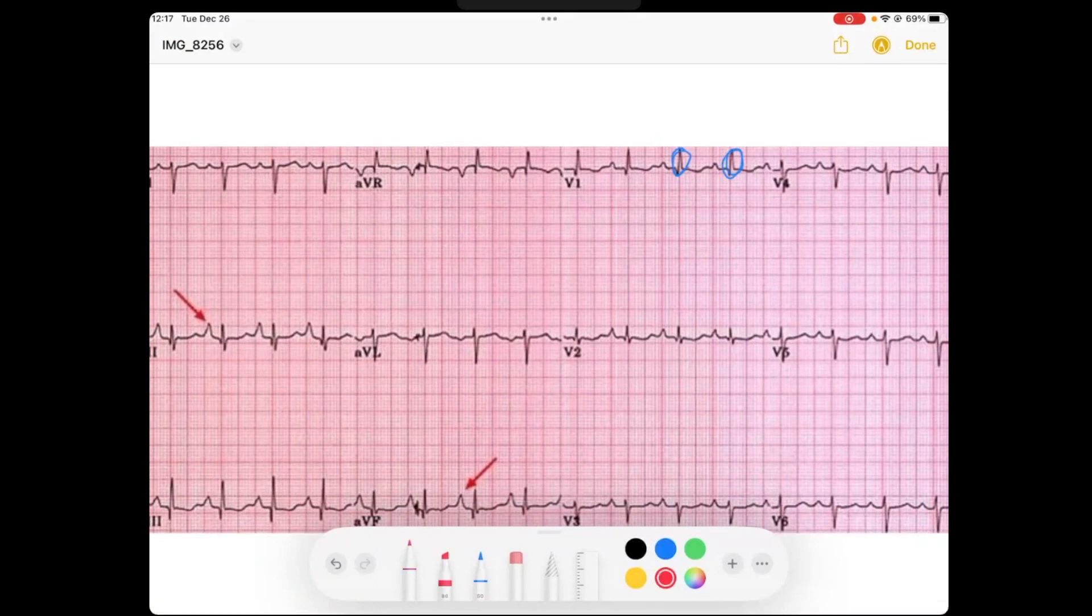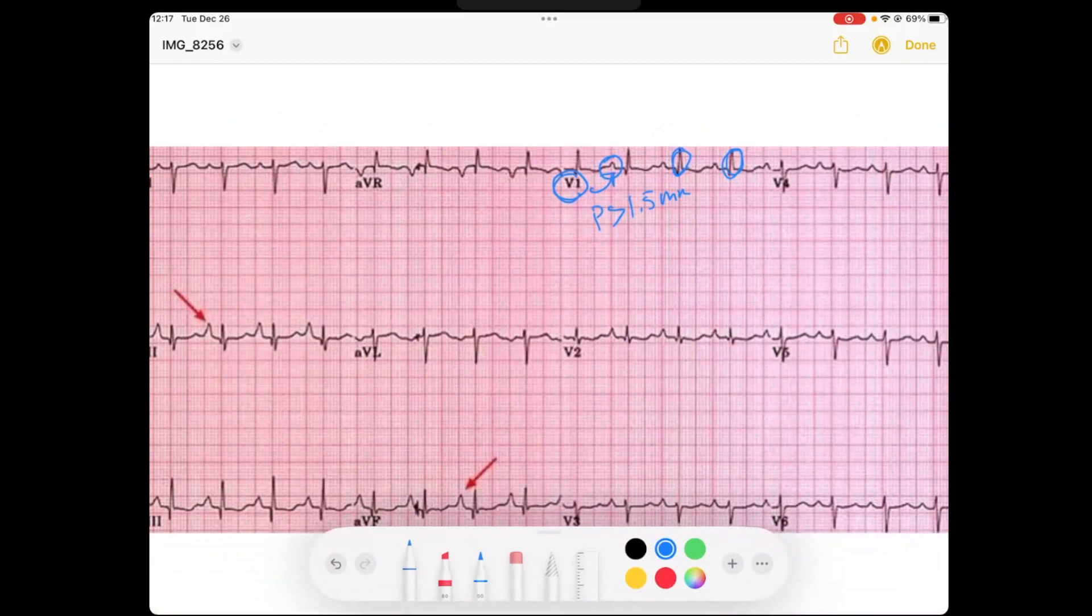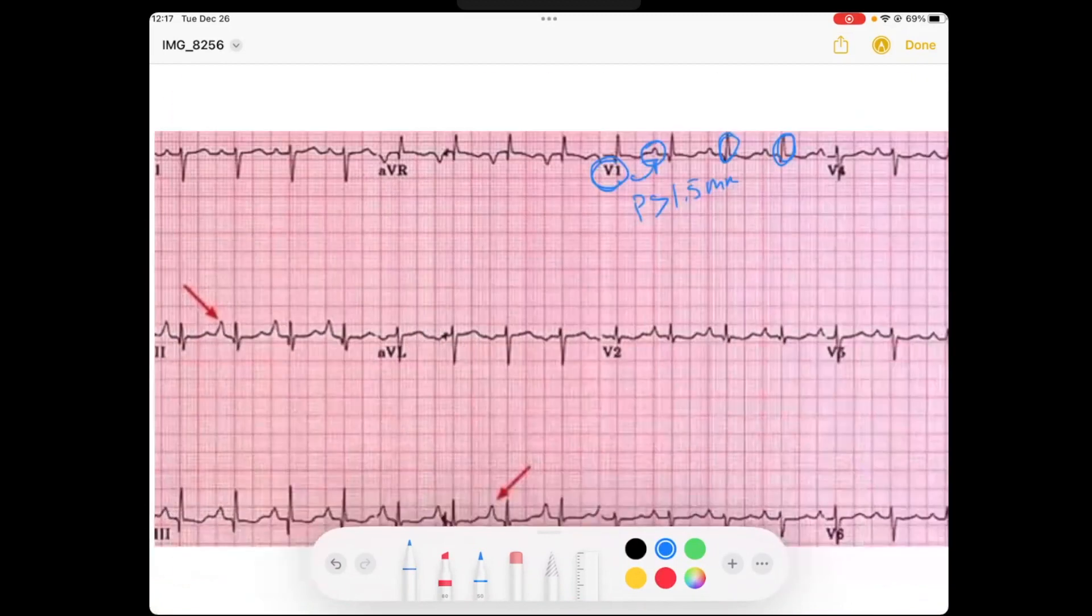And so remember I said that you could look at leads V1, and you could look to see if the P-wave is greater than 1.5 millimeters in amplitude. Here it's very close. I would say maybe not quite.